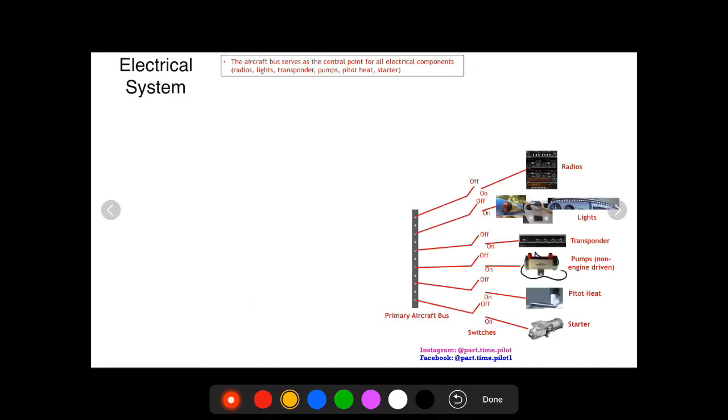Here we have a simple schematic of the electrical system of an aircraft starting with the primary aircraft bus. The primary aircraft bus is a central point for the electricity for all the electrical components. So electricity comes into the bus and then the bus disperses the electricity to the individual components like the radios, the lights, the transponders, etc. So each one of these is also going to have an on-off switch which either connects it when it's on or disconnects it when it's off from the primary aircraft bus and the electrical flow.